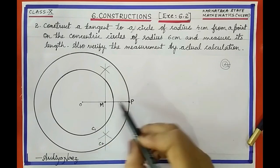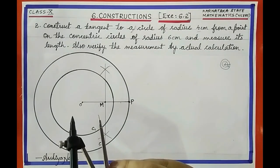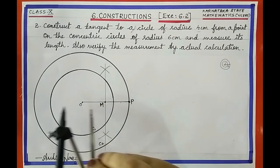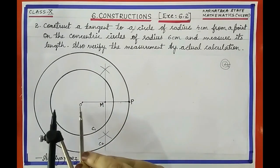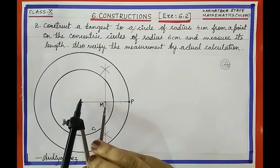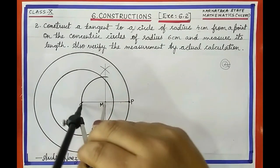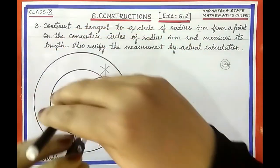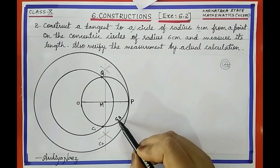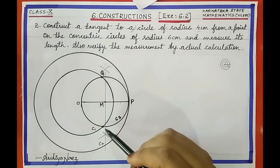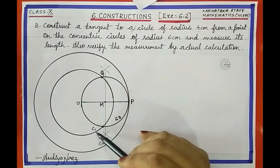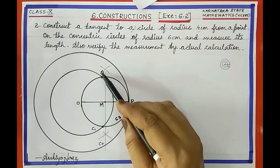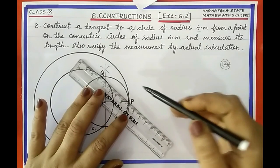Let the midpoint of OP be M. The next step is to draw a circle with M as center and radius equal to MO. This circle C3 should pass through both O and P. Now carefully identify the points of intersection of circles C1 and C3 — they intersect at a point; call this point Q. Now join P and Q.